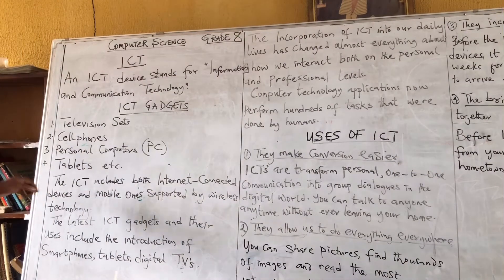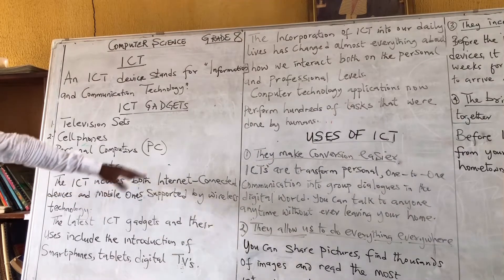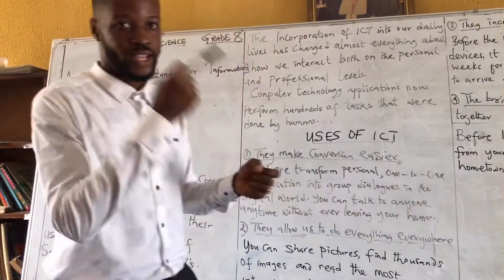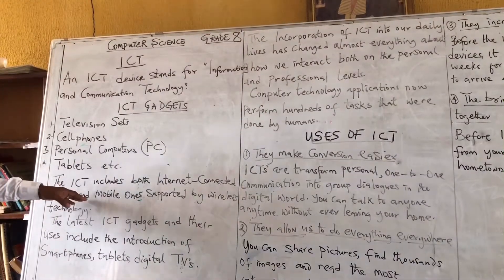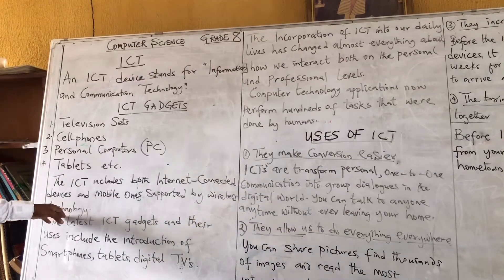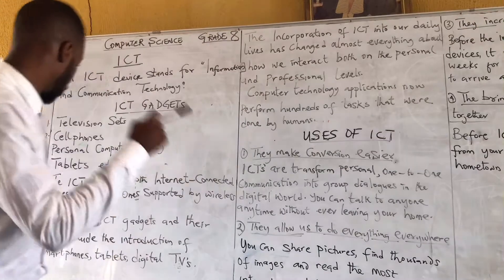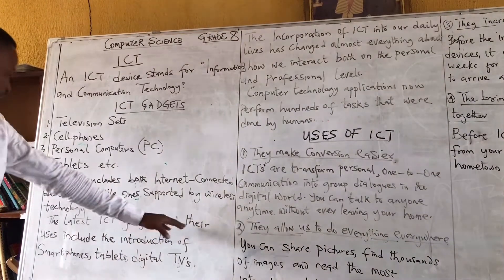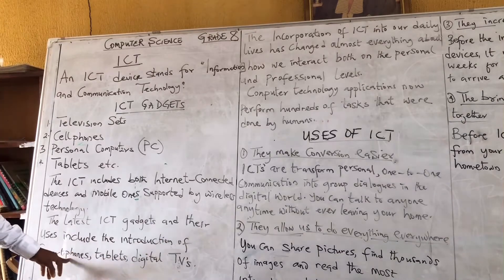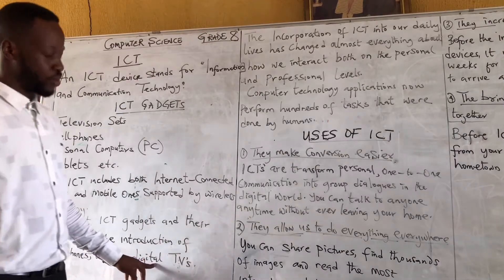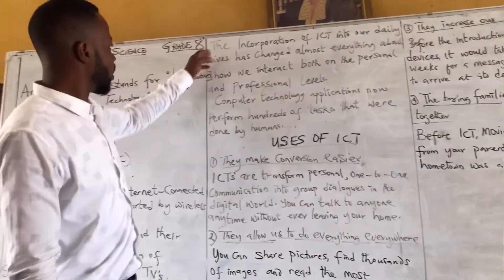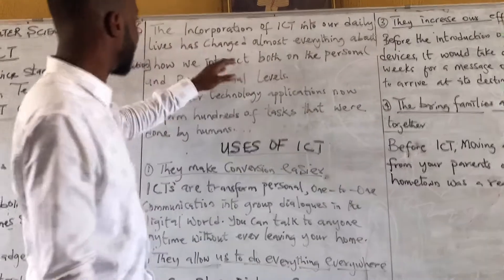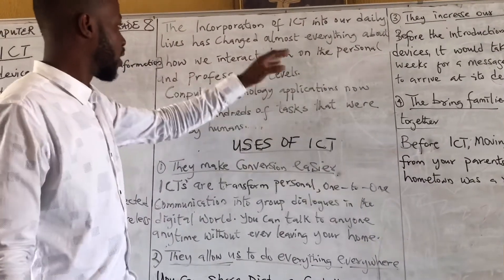ICT includes both internet-connected devices and wireless-connected devices like laptops used to get information and communicate. Some of our devices also support wireless technology under ICT. The latest ICT gadgets include smartphones, tablets, digital devices, and digital DVDs. The incorporation of ICT into our daily lives has changed almost everything about how we interact, both on a personal and professional level.